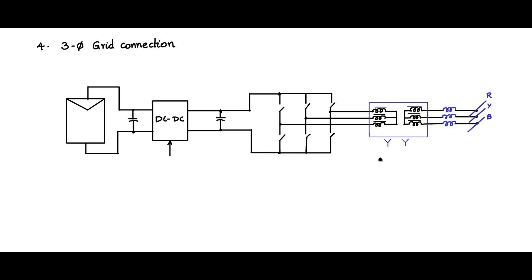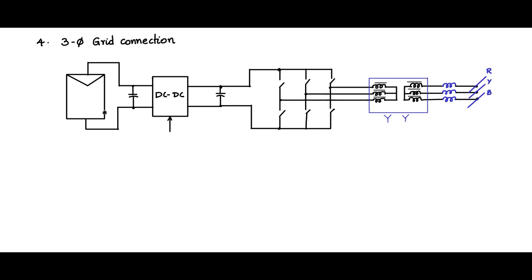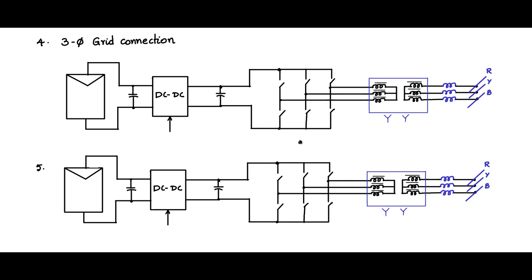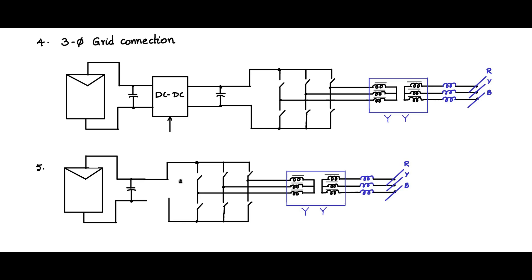In this fashion, the PV module interfaces to the three-phase grid, requiring a three-phase inverter, a three-phase transformer, and three inductors. We can further improve on this topology: if we use a current-controlled inverter, we can eliminate the DC-DC converter, which also performs maximum power point tracking, by integrating MPPT into the inverter control.